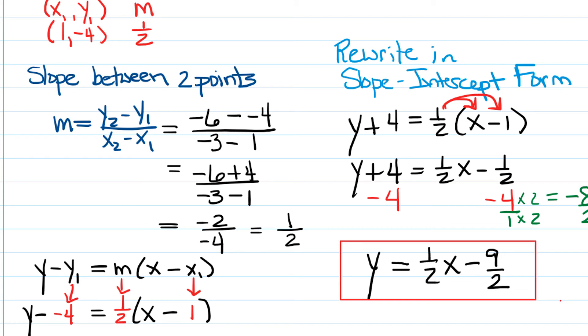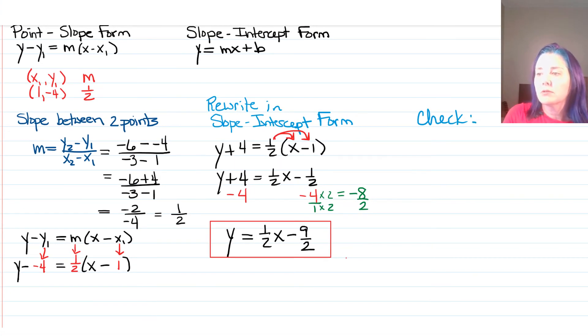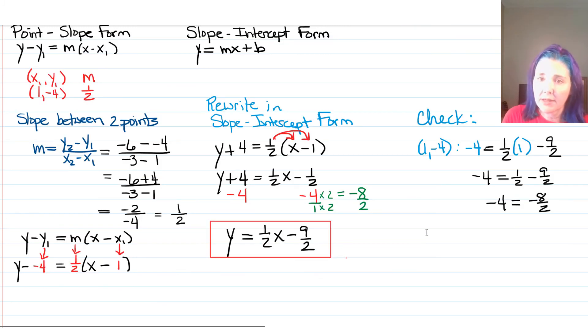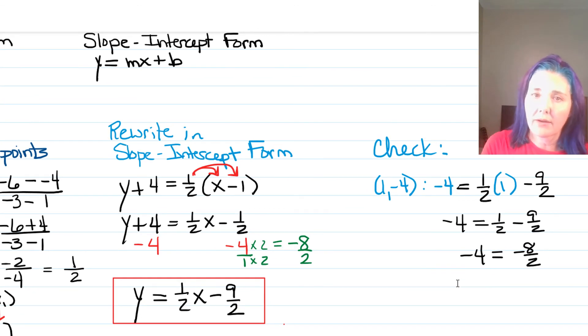All right, now let's suppose that you would like to check your answer. You finished your test. You got a couple extra minutes. How could you do that? Well, in order to check, what we could do is determine if those two original points were given, (1, -4) and (-3, -6), if they're actually on this line by just plugging them in. If we plug in (1, -4), we get -4 = (1/2)(1) - 9/2. 1/2 times 1 is just 1/2. And if we subtract 1/2 - 9/2, we get -8/2, which is equal to -4. So, it looks like we got that one right.